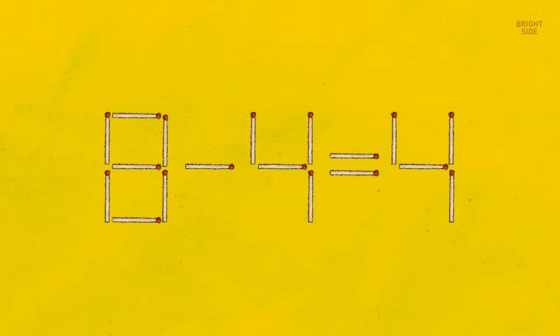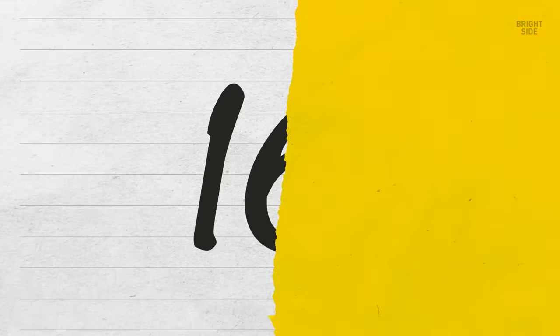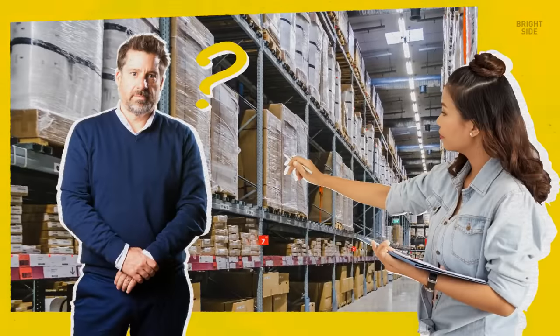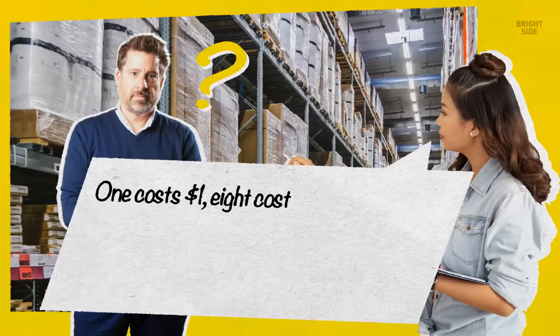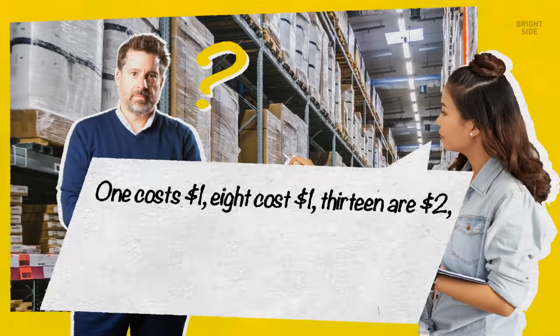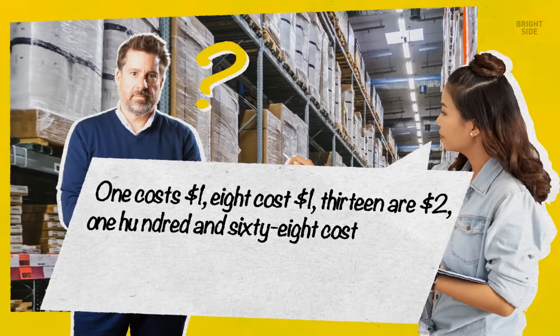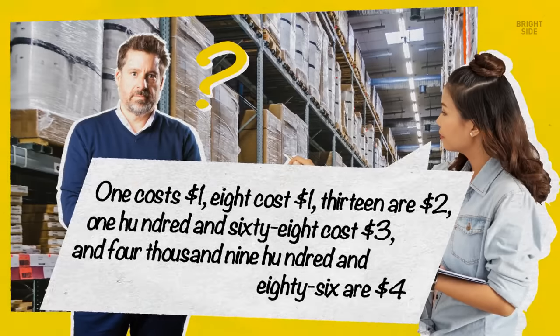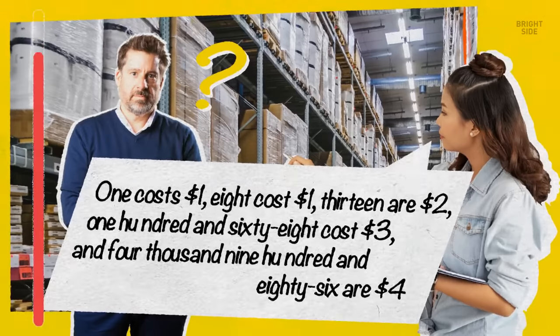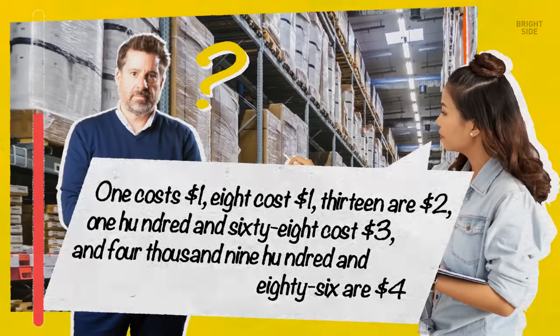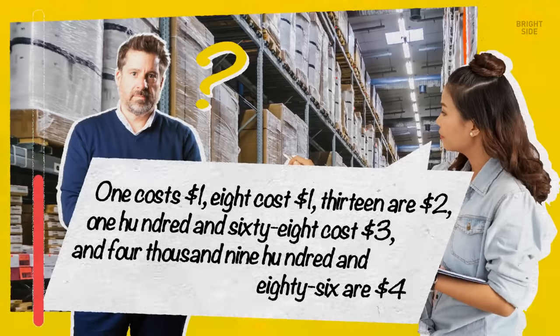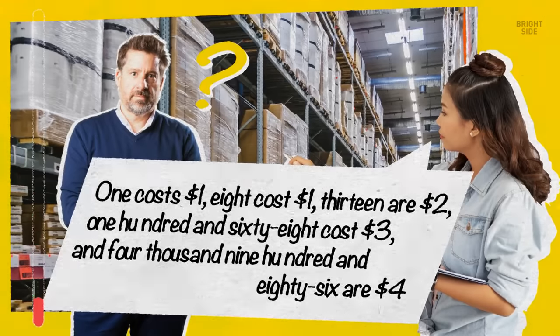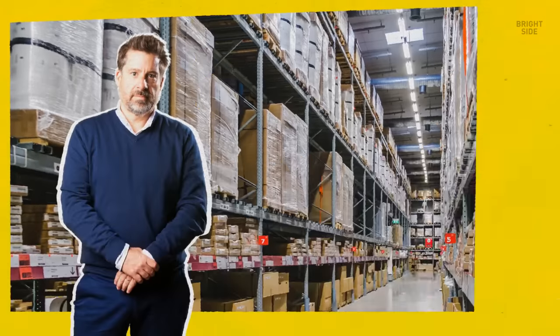A man walked into a hardware store and asked the price of one item. The seller replied, 1 costs $1, 8 costs $1, 13 are $2, 168 costs $3, and 4,986 are $4. What did the man want to buy? He was interested in door numbers.